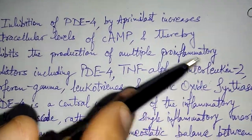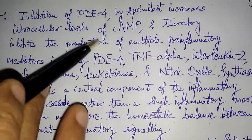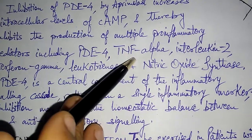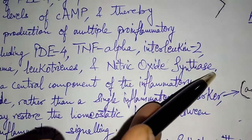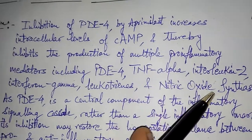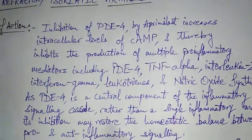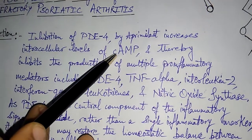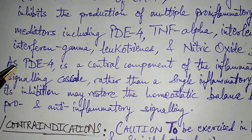Pro-inflammatory mediators are triggered when cyclic AMP levels are reduced. When cyclic AMP concentrations are higher, pro-inflammatory mediators such as TNF-alpha, interleukin-2, interferon-gamma, leukotrienes, and nitric oxide synthase are suppressed. When concentrations of these mediators rise, inflammatory conditions leading to refractory psoriatic arthritis occur. This drug, by inhibiting PDE4, increases cyclic AMP and thereby reduces the concentration of these pro-inflammatory mediators.